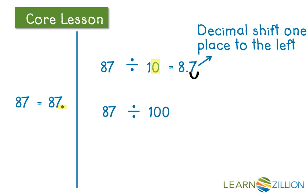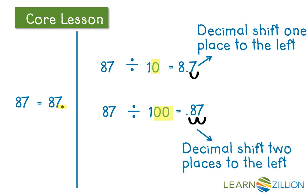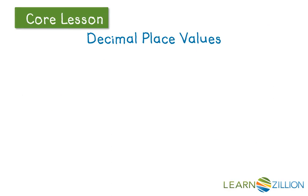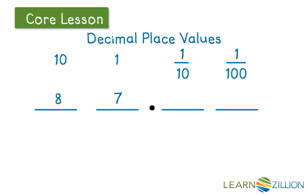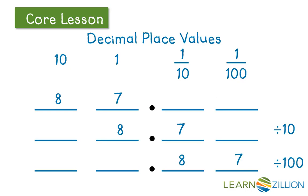Remember, dividing by 100 is like dividing by 10 twice. When we divide by 100, we shift the decimal point two places to the left. So, the 8 in 87 shifts from the tens place two spaces to the tenths place, and the 7 shifts two places from the ones place to the hundredths place. When dividing by a power of 10, we shift the decimal point the same number of places as there are zeros in the divisor — 10 or 100.